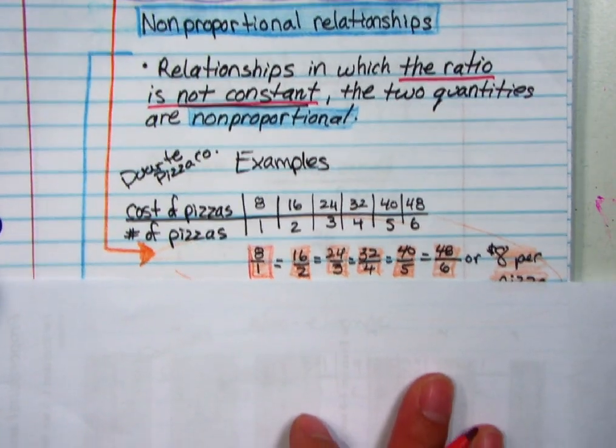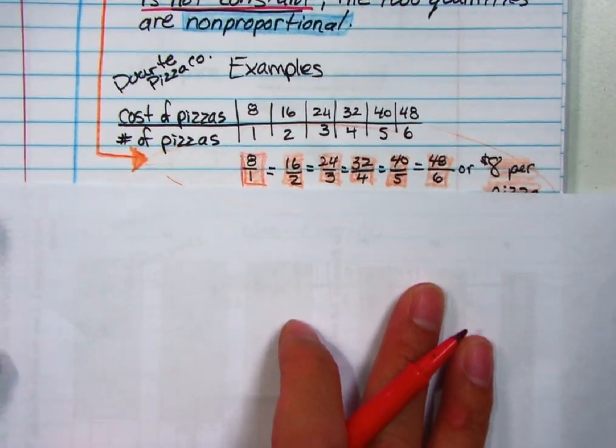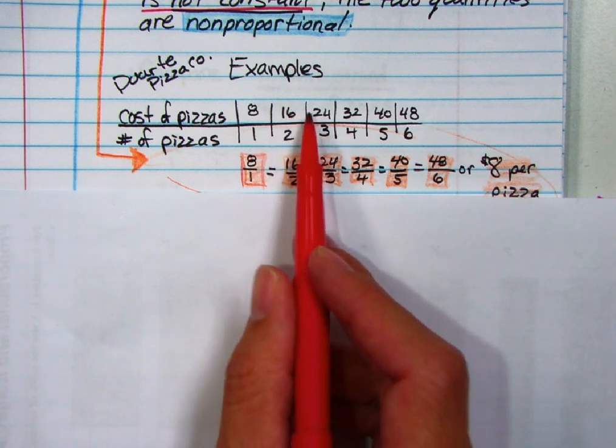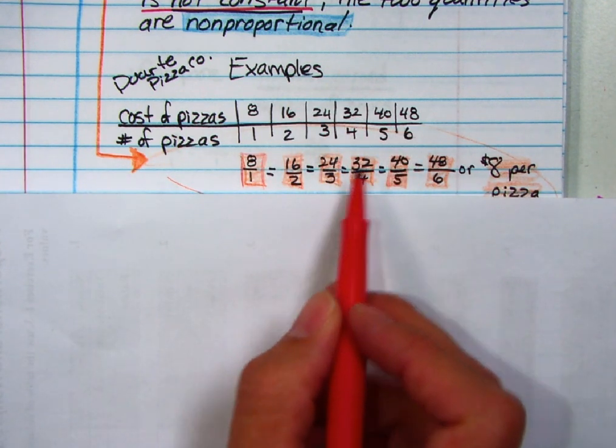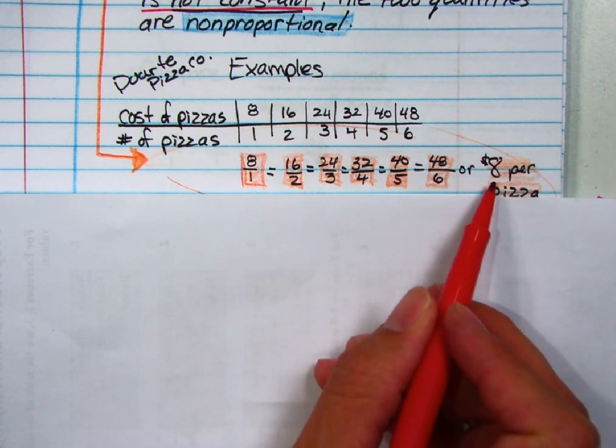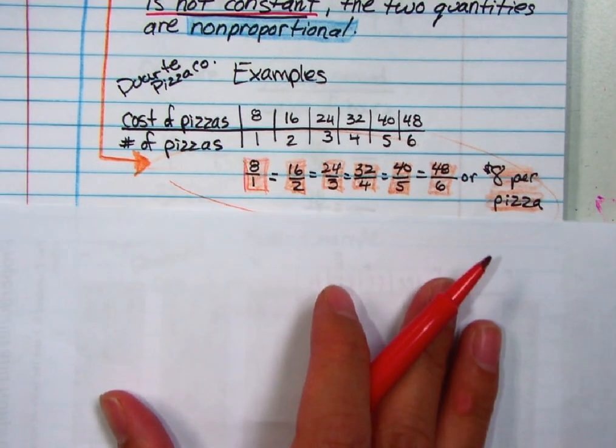Here's some examples. Going back to the Duarte Pizza Company, eight over one, sixteen over two, twenty-four over three, thirty-two over four, forty over five, forty-eight over six. All those are going to reduce to eight over one or eight dollars a pizza.